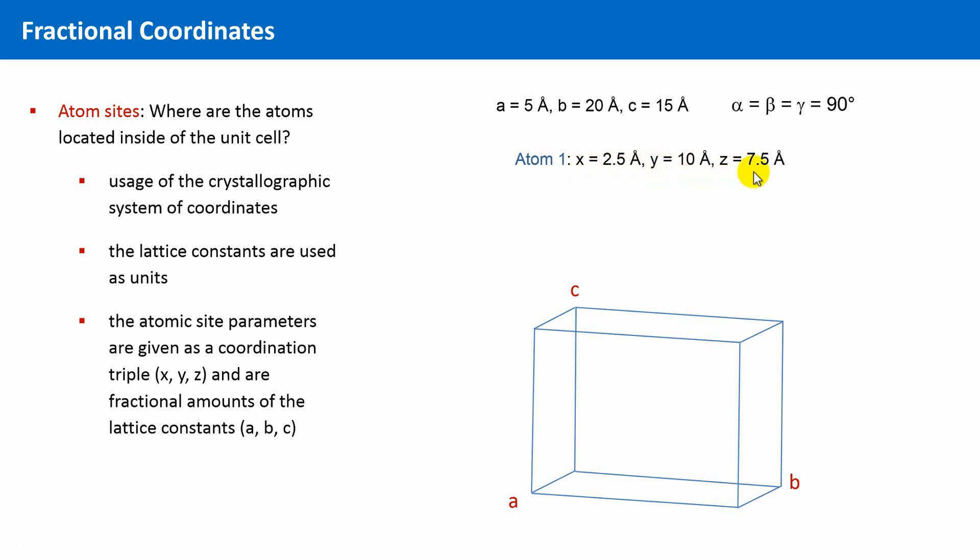We can now draw atom 1 according to these coordinates at the respective site within the unit cell. We go 2.5 angstroms in the a direction, 10 angstroms along the b direction, and finally 7.5 angstroms in the c direction. Interestingly, atom 1 is precisely located at the center of this orthorhombic unit cell.